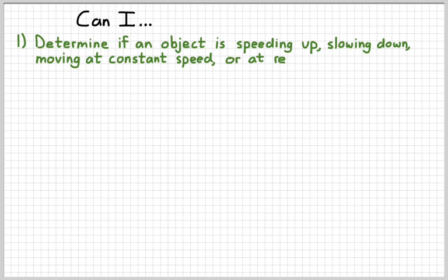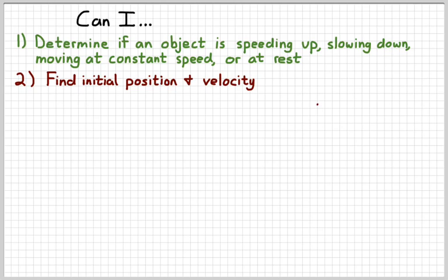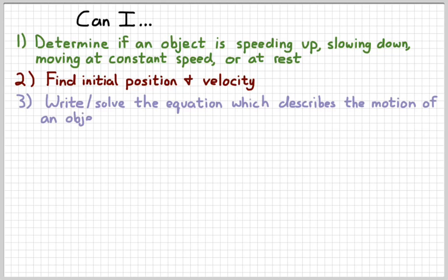These are the things we need to be able to do with a graph of position versus time. Figure out if it is speeding up, slowing down, moving at a constant velocity, or possibly even at rest. And then if we're given a graph, or if we generate one from data, we need to be able to find the initial position and velocity. That's just finding y-intercept and slope. And then third, we need to be able to write or solve the equation that describes the motion of an object with constant velocity, either from graph, or from data, or from a situation in a given problem type scenario.